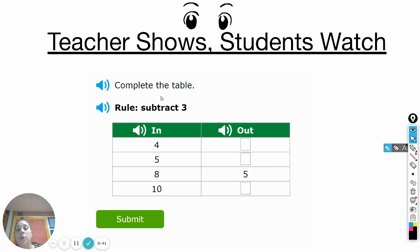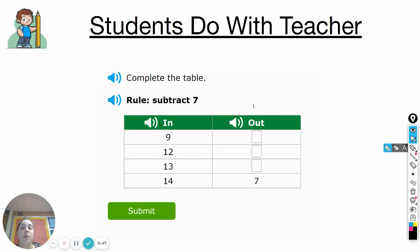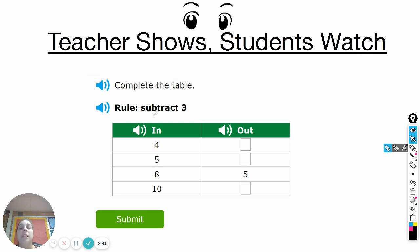The rule is that every number you put into the machine you have to subtract three and that's the number that you get out. You can see they did one of them for you. In the machine they put eight, they had to subtract three. Eight minus three equals five. So five would come out of the machine. So that's kind of like what you're doing.